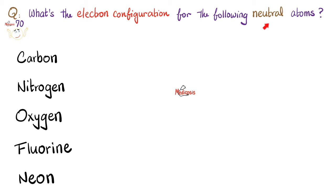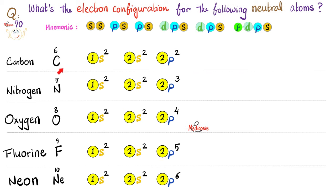Now let's write configurations for more atoms. Carbon (Z=6): 1S², 2S², 2P². Nitrogen (Z=7): 1S², 2S², 2P³ — check: 2+2+3=7. Oxygen (Z=8): 1S², 2S², 2P⁴. Fluorine (Z=9): 1S², 2S², 2P⁵. Neon (Z=10): 1S², 2S², 2P⁶. Remember the mnemonic: SS — PES — PES — DPS — DPS — FDPS.